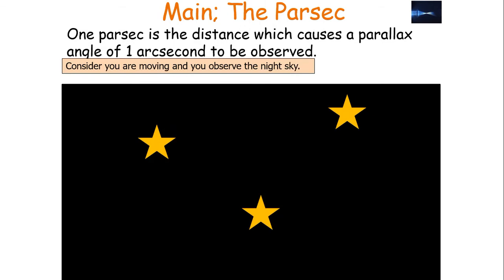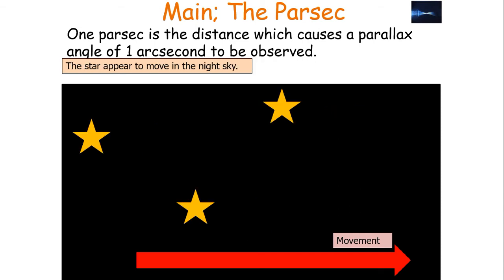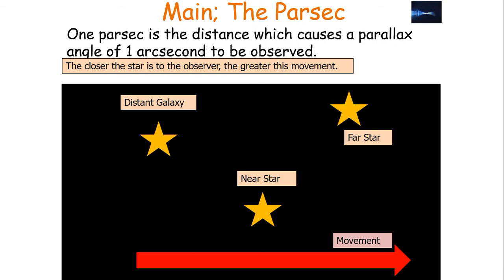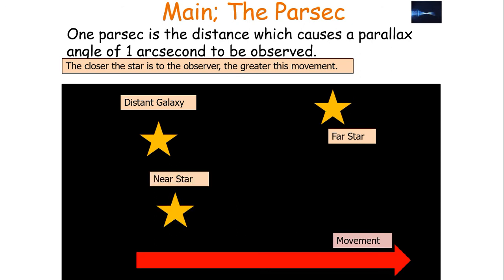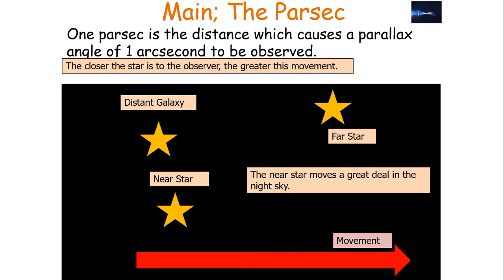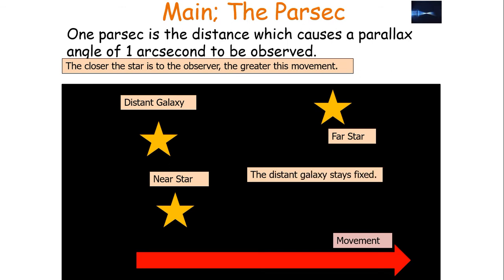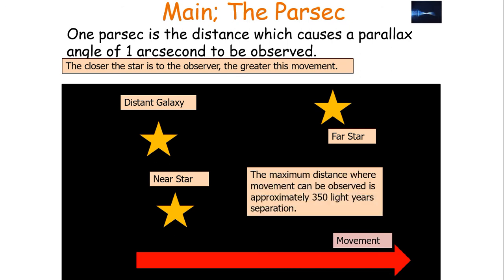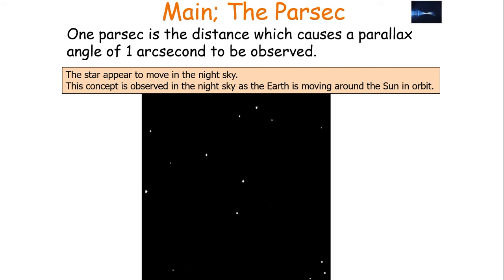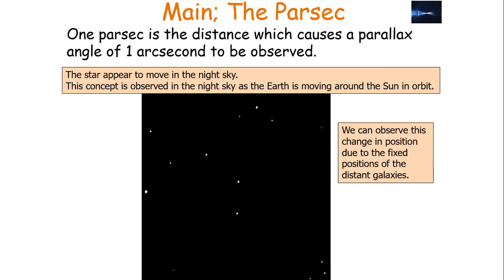Consider you are moving and you observe the night sky — if you have a movement in a particular direction, the stars appear to move in the night sky. The closer the star is to the observer, the greater this movement. A near star will move a lot more than a far star, which will move a lot more than a distant galaxy. The near star moves a great deal in the night sky, the far star moves a little, and the distant galaxy remains approximately fixed. The maximum distance where you can observe this movement is approximately 350 light years away. The stars appear to move in the night sky as the Earth is moving around the Sun in orbit, and we can observe this change in position due to the fixed positions of the distant galaxies, which appear not to move.